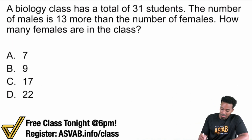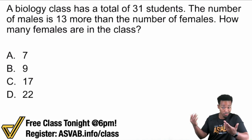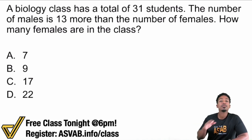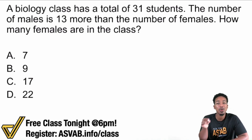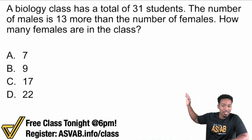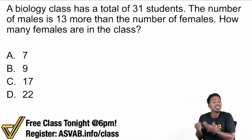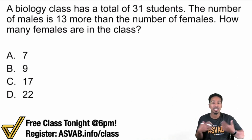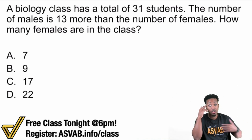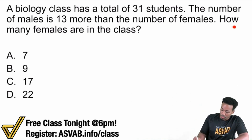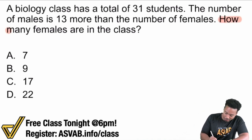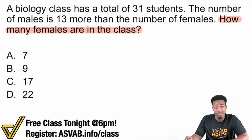So the problem says a biology class has a total. As always, in every arithmetic reasoning problem or word problem that you'll do, no matter what, you need to make sure that you read the question first. So it says: how many females are in the class?